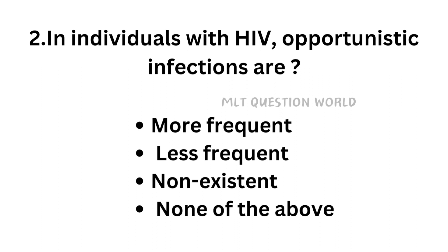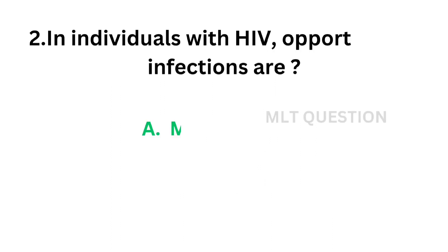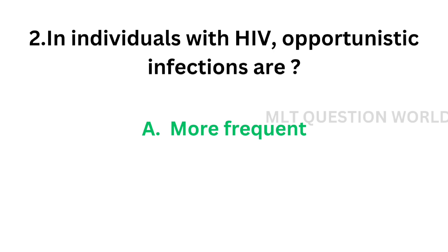Question number 2: In individuals with HIV, opportunistic infections are — option A, more frequent; option B, less frequent; option C, non-existent; option D, none of the above. The correct answer is option A, more frequent. Opportunistic infections in HIV patients are more frequent.